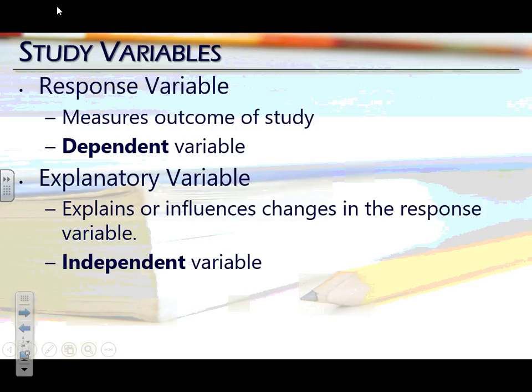One thing to note: when we say the explanatory variable explains or influences changes in the response variable, we have to be careful with how we word this. We are not guaranteed that two variables actually have a cause-and-effect relationship. For instance, if we look at the number of TV sets per household in a country and life expectancy, there's an extremely high positive correlation between them. Does that mean we should give countries bunches of TVs to make them live longer? No.